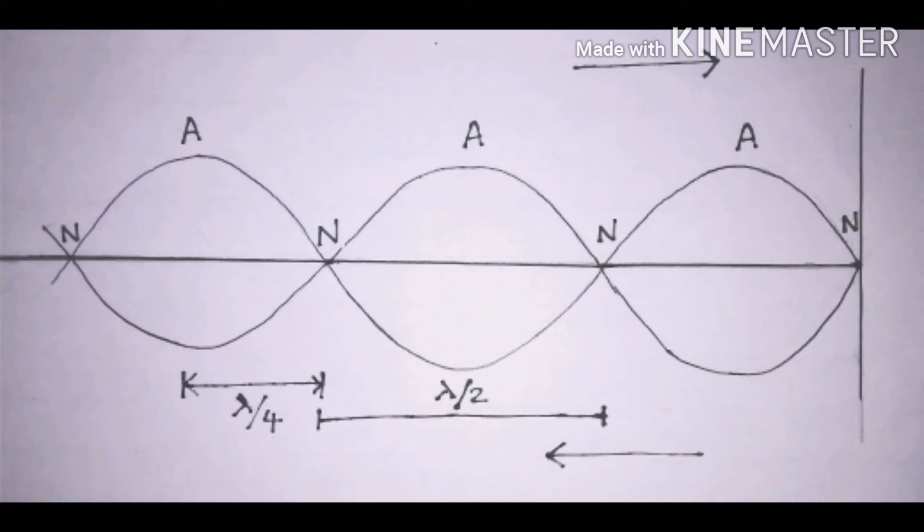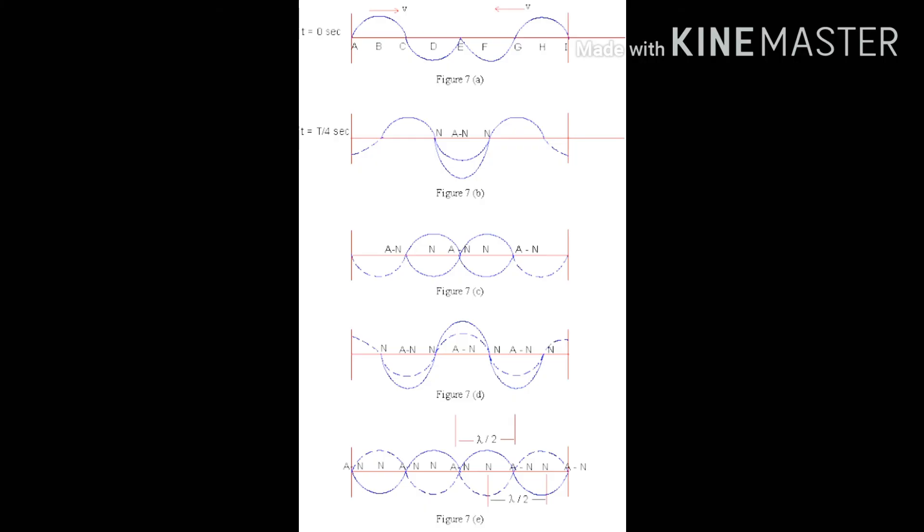Now, stationary wave is doubly periodic. That is, it is periodic in space as well as time. How is that possible? It's only because it's not moving, and since it's not moving, it is periodic in space as well as in time.